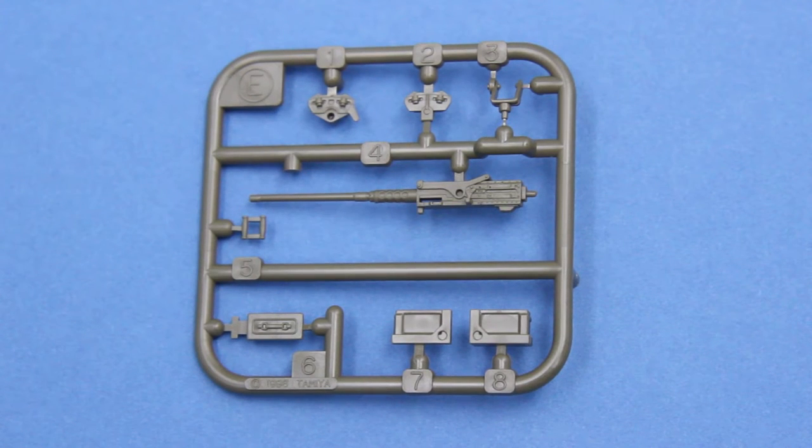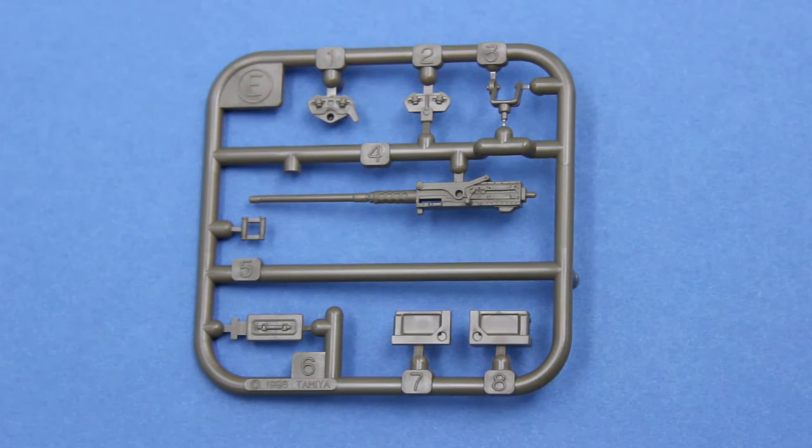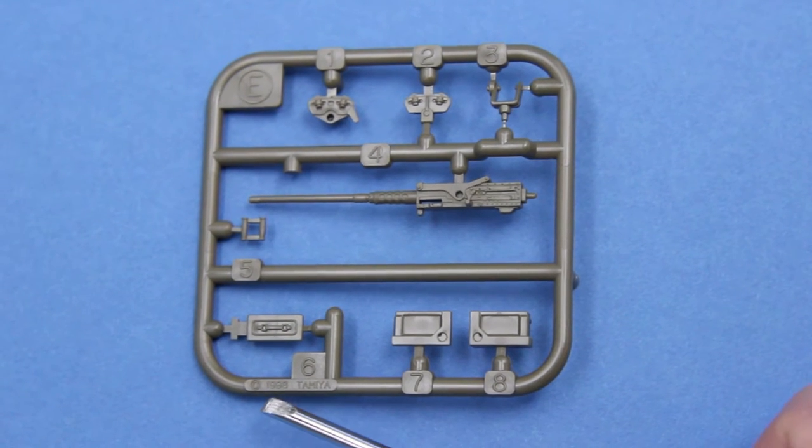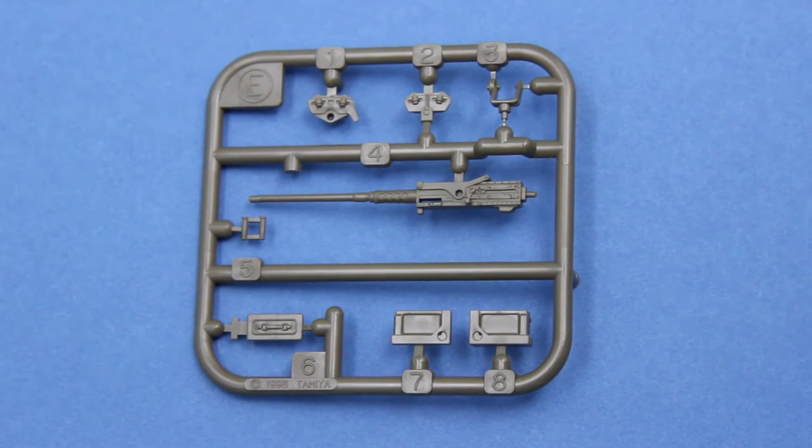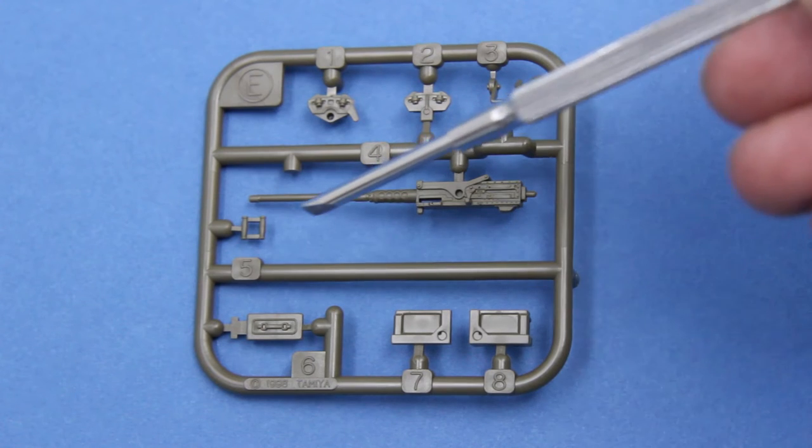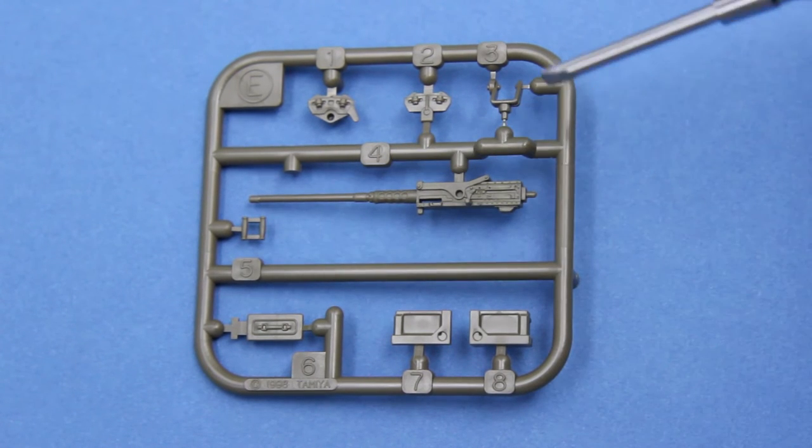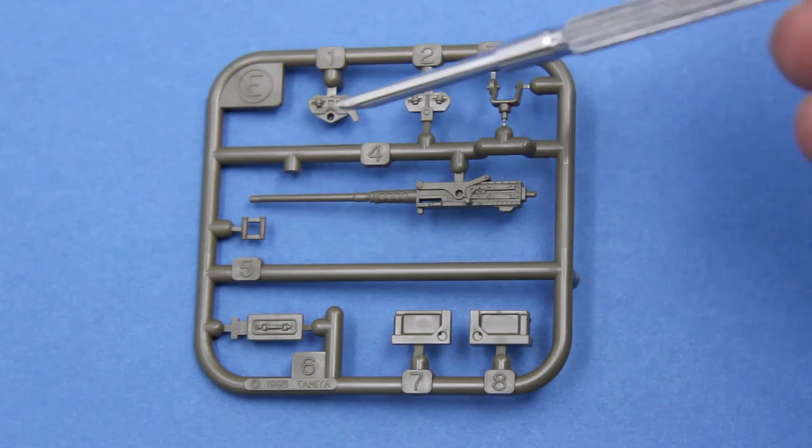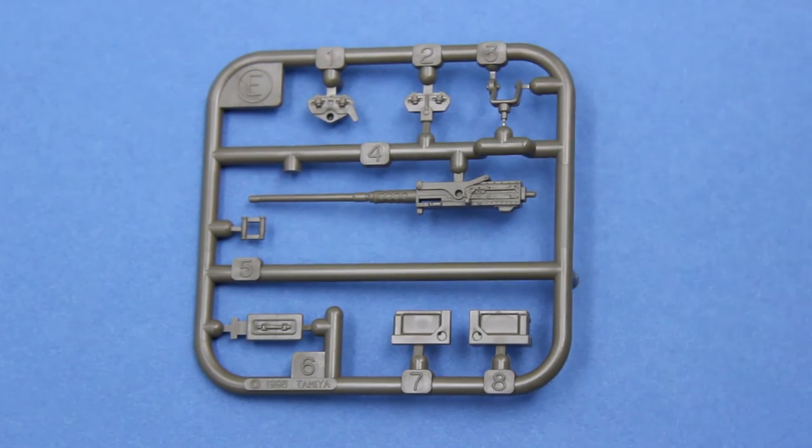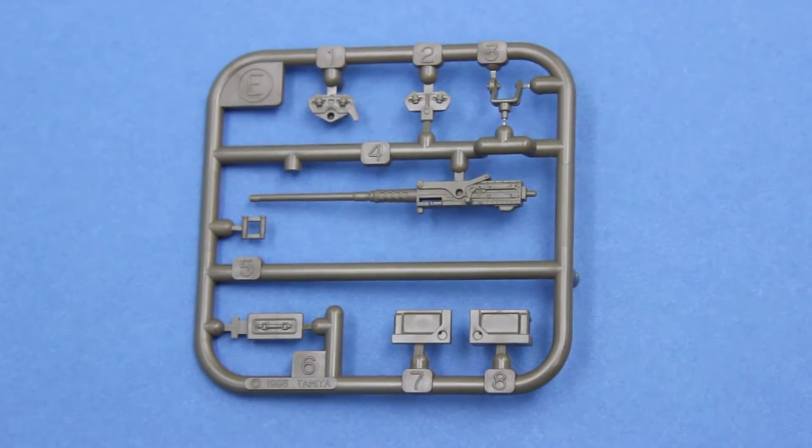This is the same old 50 cal sprue that has been with Tamiya kits since time immemorial. Or at least since about 1998 as you can see here. It's pretty basic. Yeah there's the 50 cal with its spade handles. The pintle mount. These are for a skate rail which isn't obviously on the Sherman tank. And the whole thing is best thrown away and replaced.